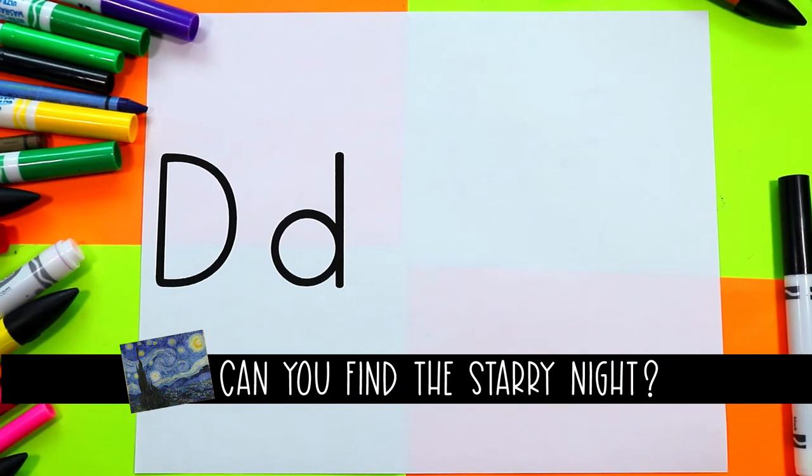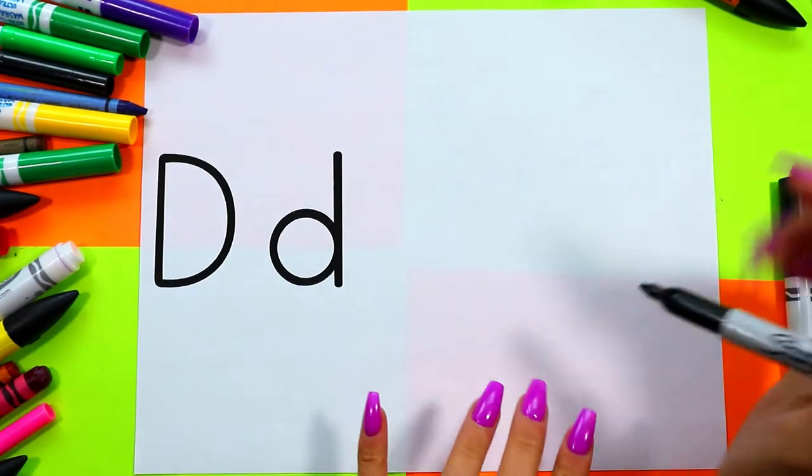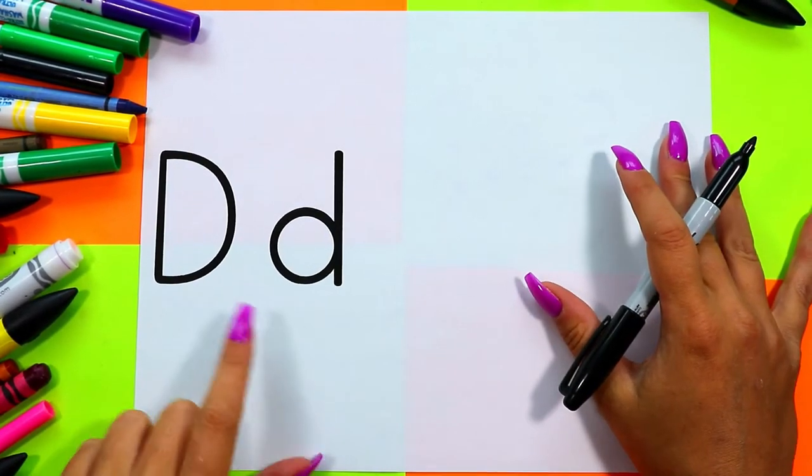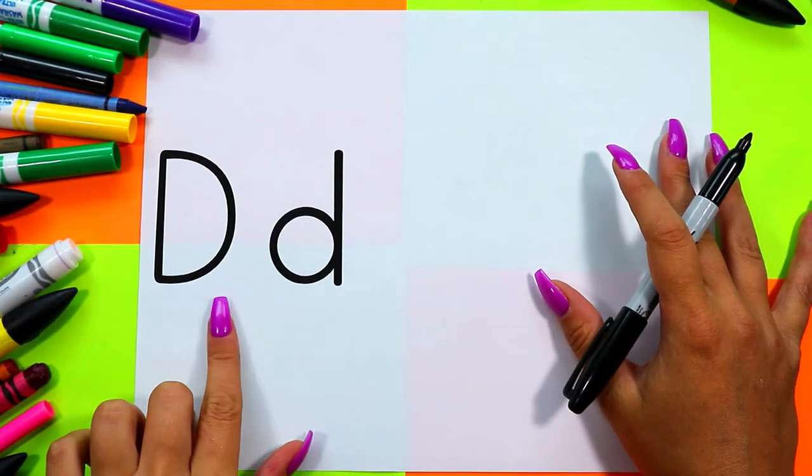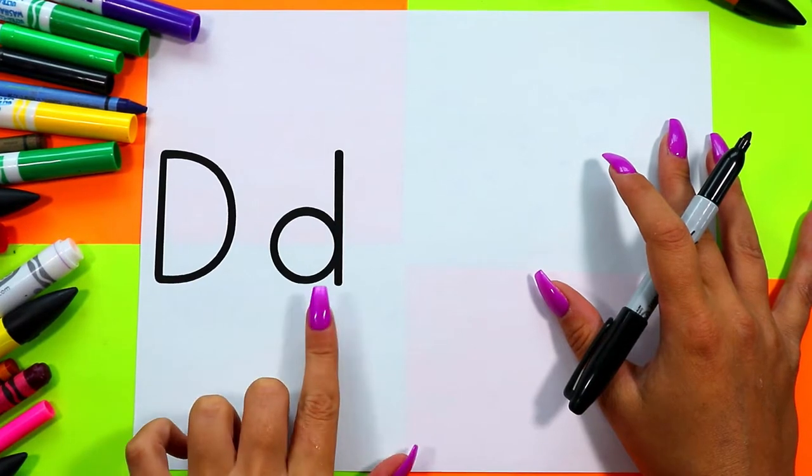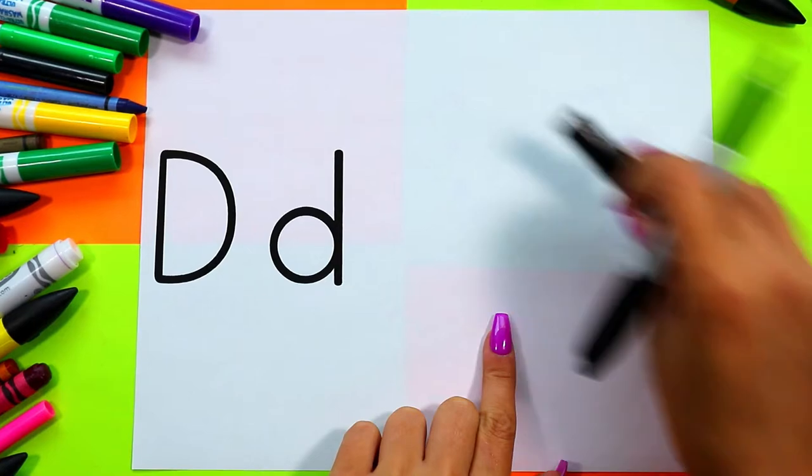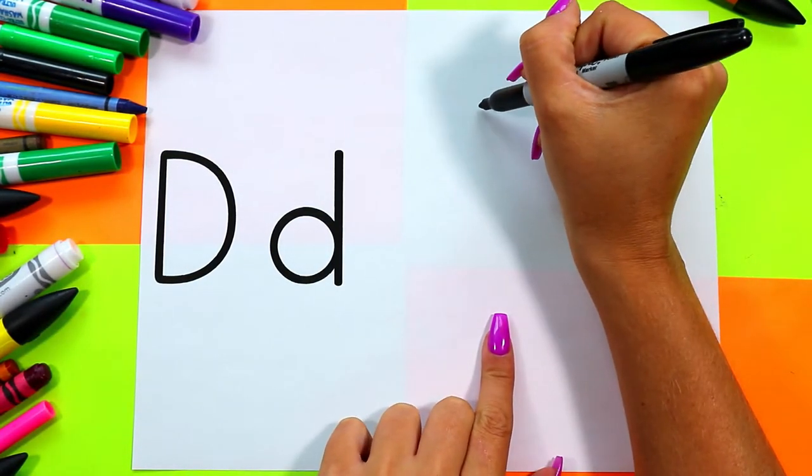We're going to begin our dog with drawing the face first. We're drawing a dog because dog starts with the letter D. This is an uppercase D and this is a lowercase d.